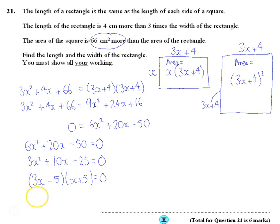Or x plus 5 equals 0. So my answers are, take 5 to the other side, 5 divided by 3. Or x is equal to minus 5. Now clearly I can't have this. Because this is a negative answer, I'm talking about length here. So this is the answer that I want to take.